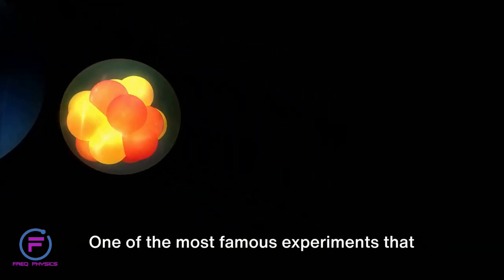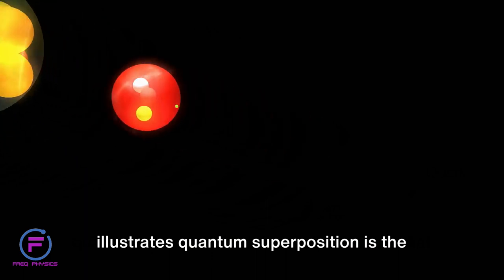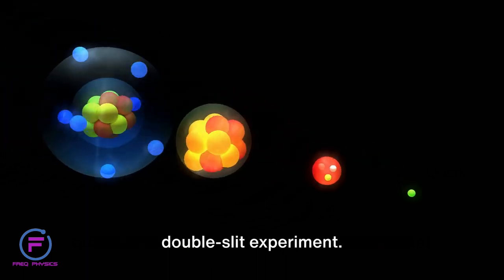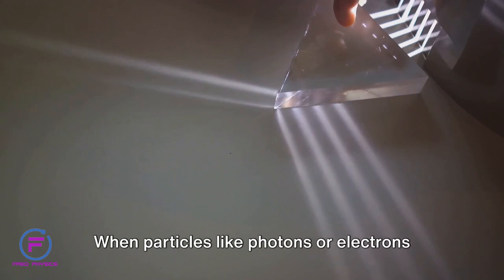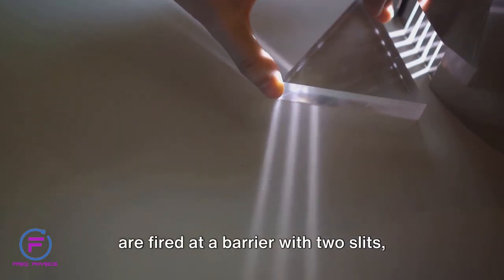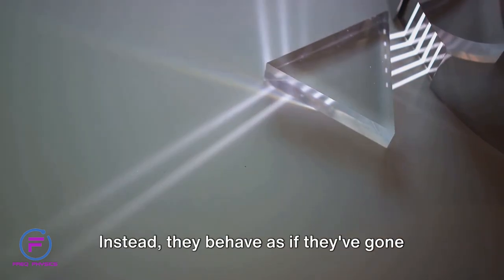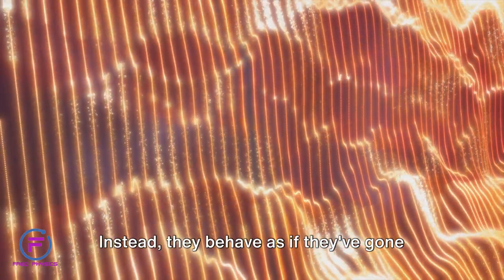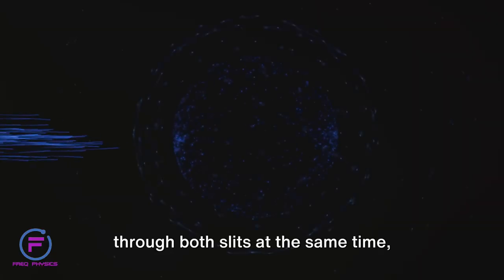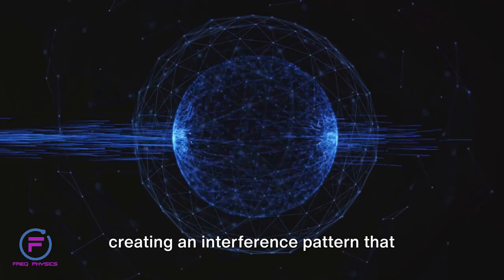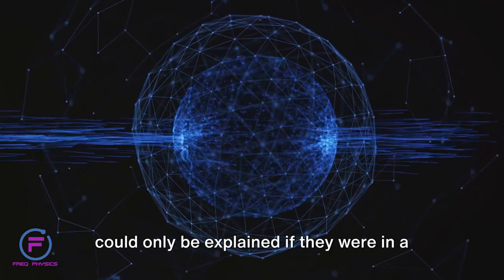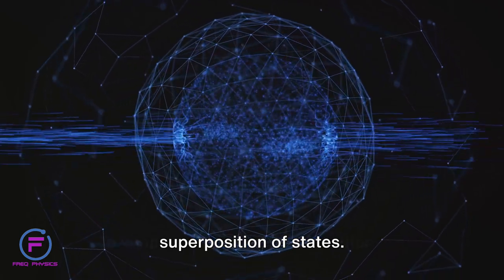One of the most famous experiments that illustrates quantum superposition is the double-slit experiment. When particles like photons or electrons are fired at a barrier with two slits, they don't just go through one slit or the other. Instead, they behave as if they've gone through both slits at the same time, creating an interference pattern that could only be explained if they were in a superposition of states.